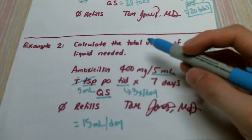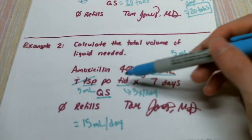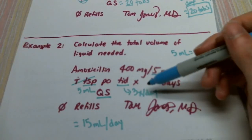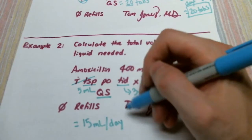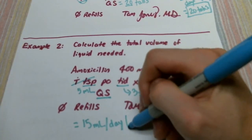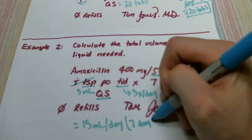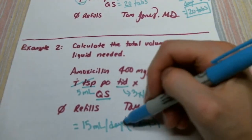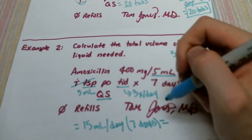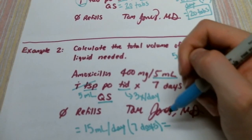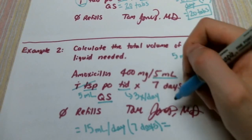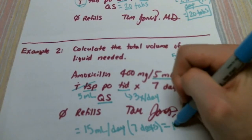And we multiply that out. We're just multiplying the five milliliters three times a day. But this is not a single course of therapy. There are seven days, so we have to multiply this by seven days. And when you do this, you get 105 mLs.